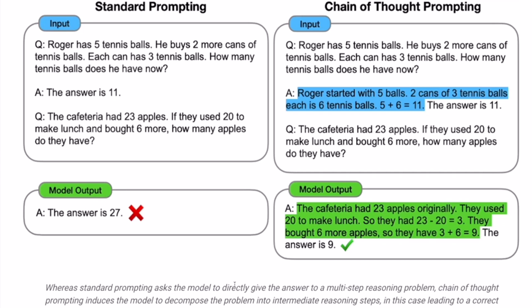Using chain of thought prompting, we provide examples where the reasoning is explained step by step. For instance, for the tennis ball problem, instead of just saying '11,' we write: 'Roger started with 5 balls. Two cans of 3 tennis balls each is 6 tennis balls. 5 + 6 = 11.' By describing the reasoning in our example, we induce the model to do the same — and the cafeteria problem now correctly yields 9 with full reasoning shown.